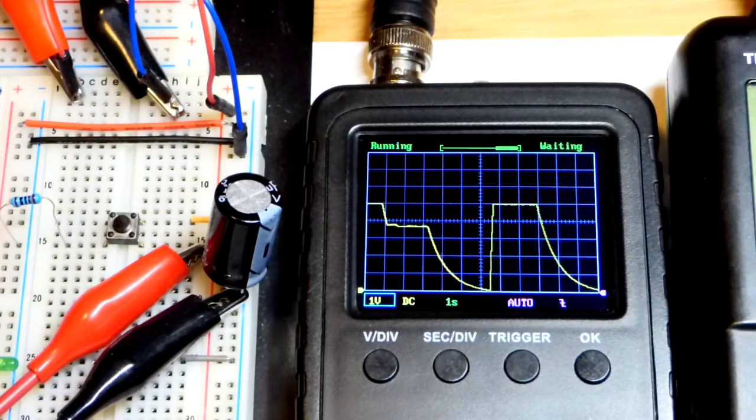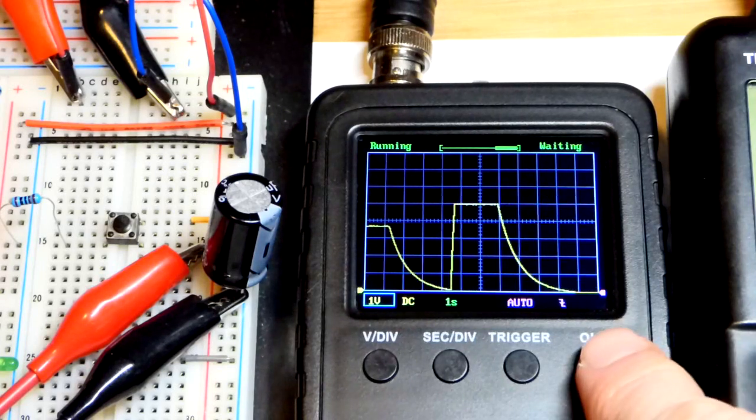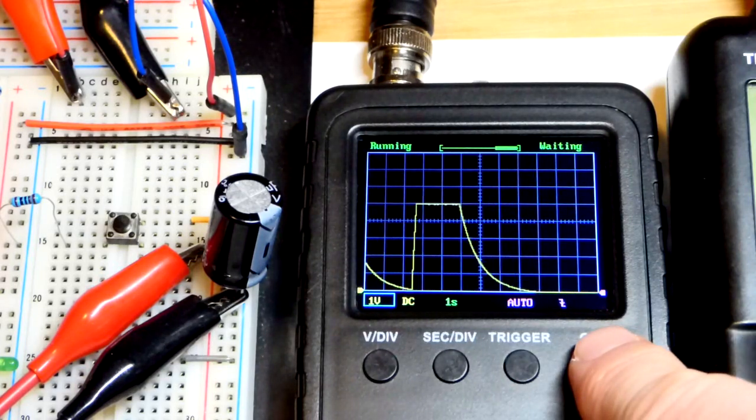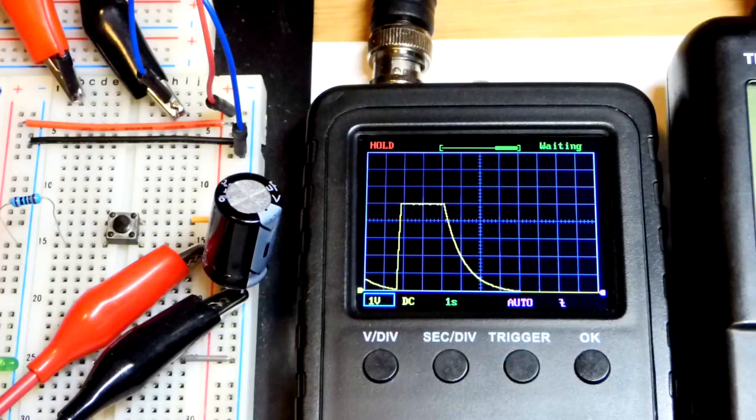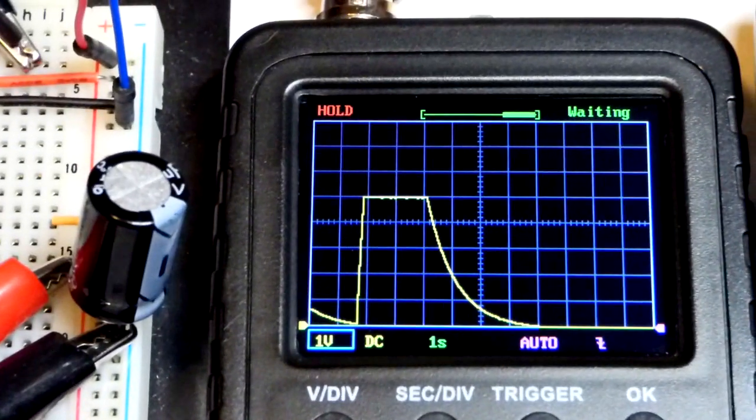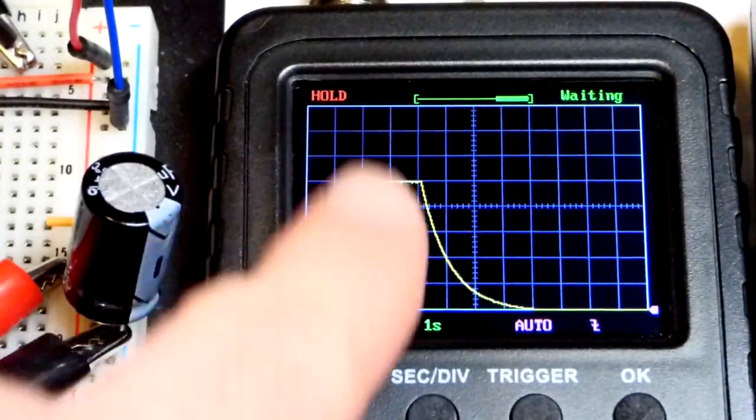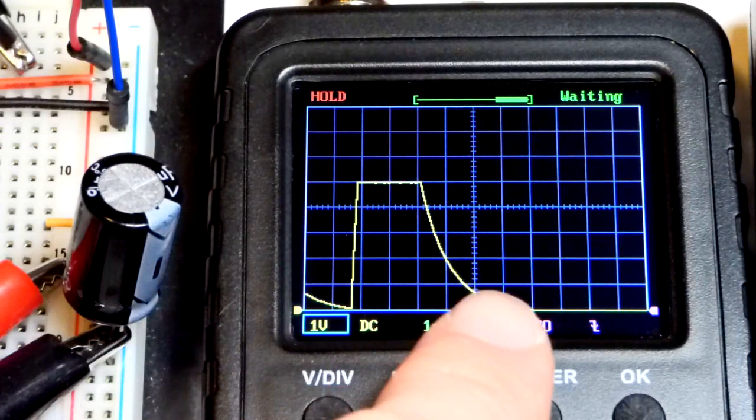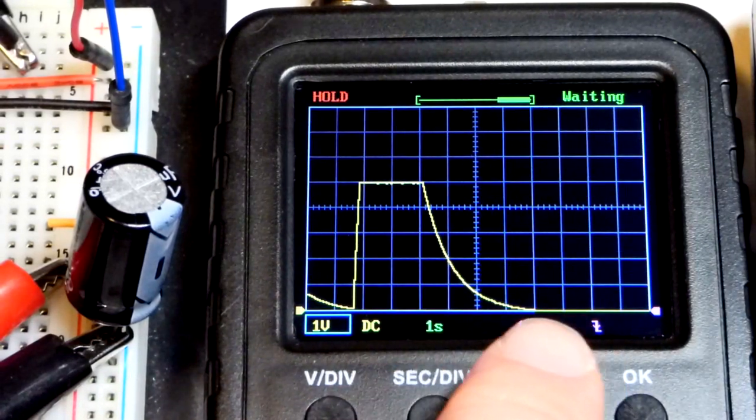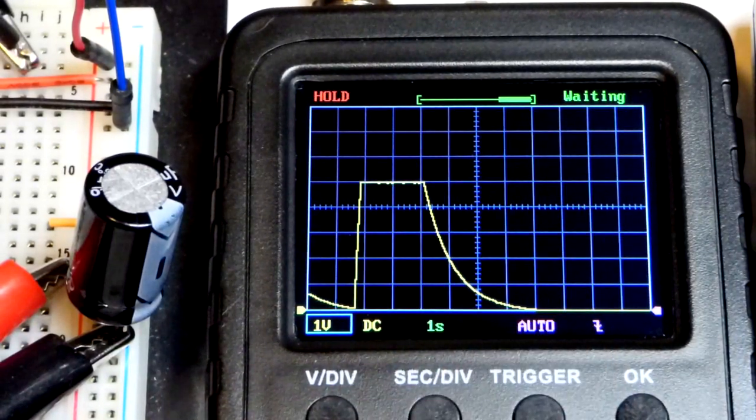And now we have our nice little curve there. I'll try to pause it. Right there should be good. That's not too bad. So again, we got the curve. It's five volts now instead of seven. One, two, three, four, five. And about there before it is fully discharged.